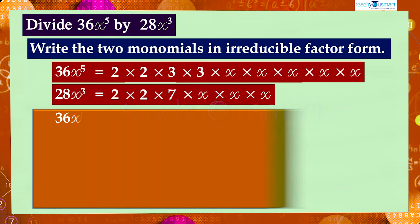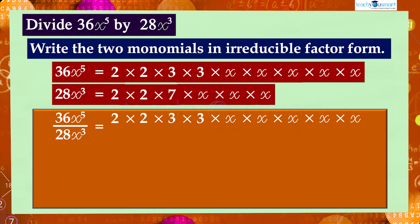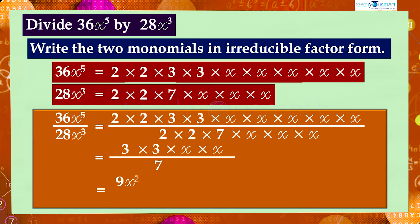Therefore, 36x⁵ divided by 28x³ can be written as (2 × 2 × 3 × 3 × x × x × x × x × x) divided by (2 × 2 × 7 × x × x × x), which equals 3 × 3 × x × x divided by 7, which equals 9x² divided by 7. This result is also a monomial.